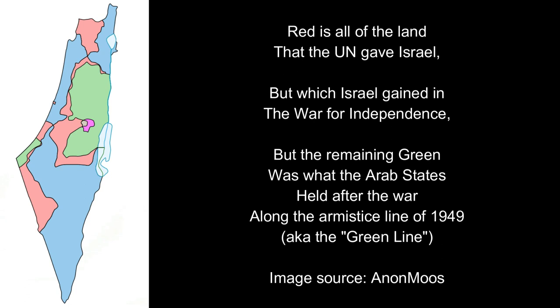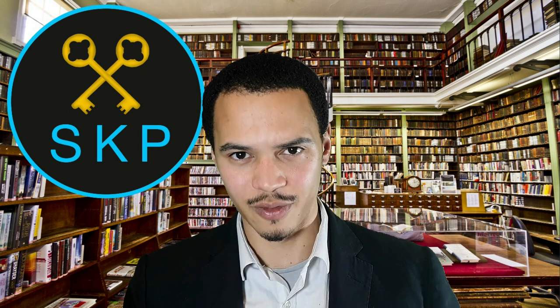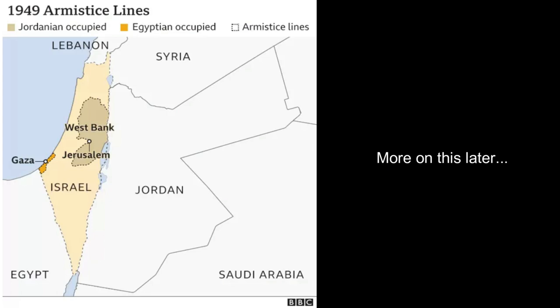Israel's borders were now drawn along the so-called armistice line, or the Green Line, decided in 1949. However, these weren't real borders — no Arab state recognized Israel's right to exist, and it wasn't a peace deal, just a ceasefire line. There was no true peace when surrounded by nations wanting Israel destroyed. Egypt had control over Gaza, and the West Bank was controlled by Jordan.